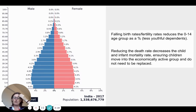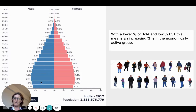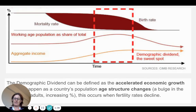Reducing the death rate means that infant and child mortality rate would be much lower, and I don't need to replace those children. So do note that this country has very few elderly dependents as a proportion. I want to lower the youthful dependents and get that large group of economically active. How do I achieve it? There are a number of things I need to invest in: education, family planning, economic reforms, health, and empowerment — that means gender equality as well.